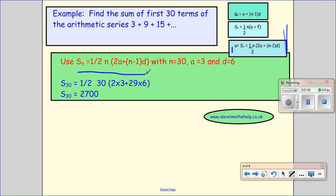So I use this formula, and then I just substitute all the bits in, so I've got half, and N is 30, and then 2 lots of A, 2 times 3, plus N minus 1, and 30 minus 1 is 29 times 6, and basically I just sort it out.